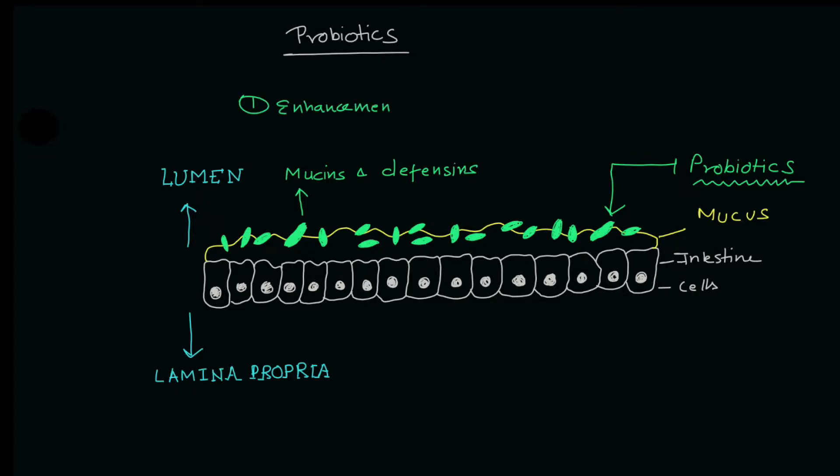The first role of the probiotic is to produce mucins and defensins which enhance the epithelial barrier. So that's the first function that you need to remember.